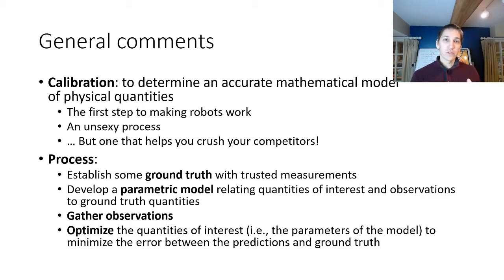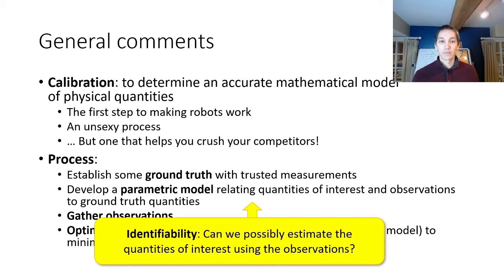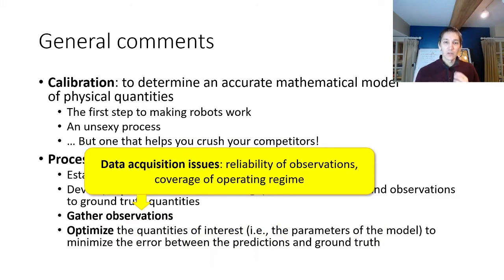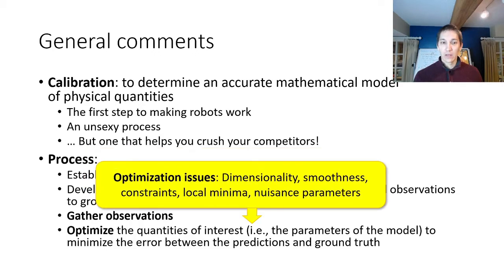There are a lot of nuances to making this process work reliably. One question is whether we can actually estimate those quantities of interest using the observations that we get and our ground truth. There are also questions about data acquisition — how reliable are the observations, and are we covering the whole operating regime of the robot. Finally, there are algorithmic issues about optimization, such as the dimensionality of the problem, its smoothness, local minima, and nuisance parameters. We'll talk about nuisance parameters in just a bit.